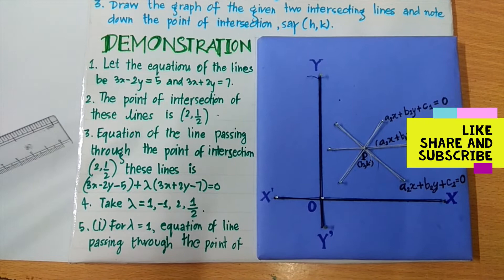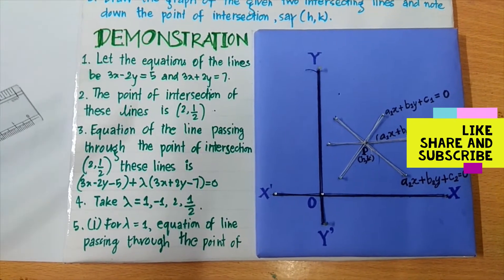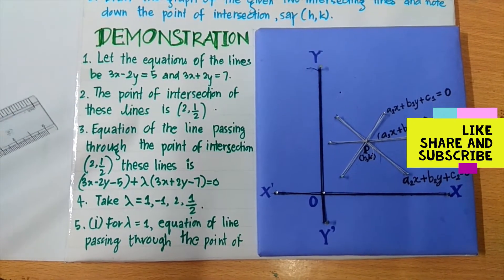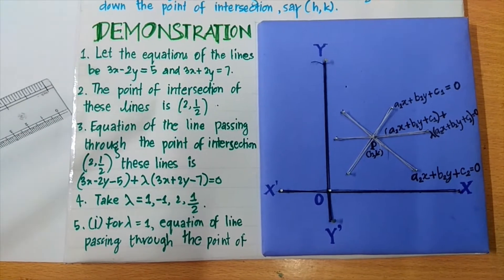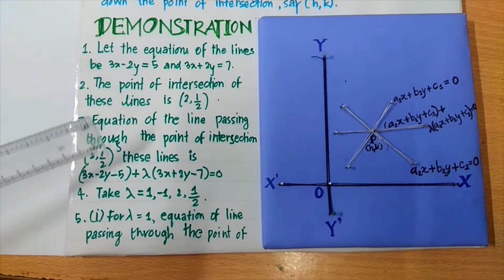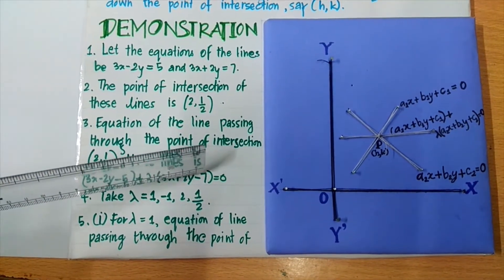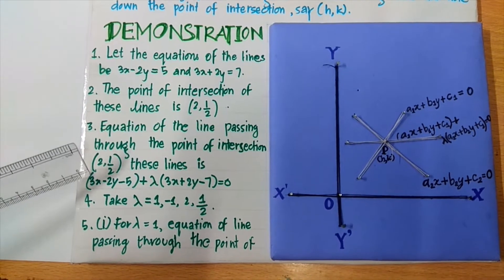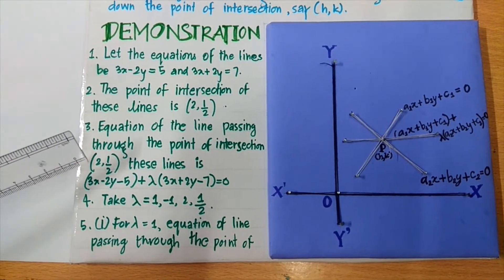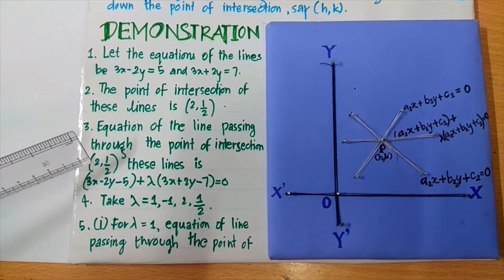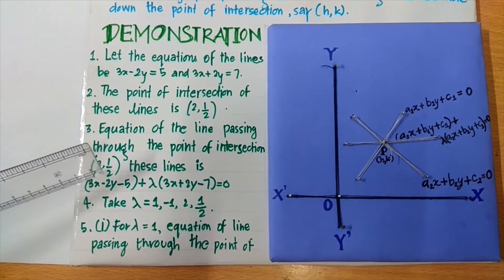The equation of the line passing through the point of intersection (2, 1/2) is 3x minus 2y minus 5 plus lambda into 3x plus 2y minus 7 equals to 0. By taking different values of lambda, we find different equations.